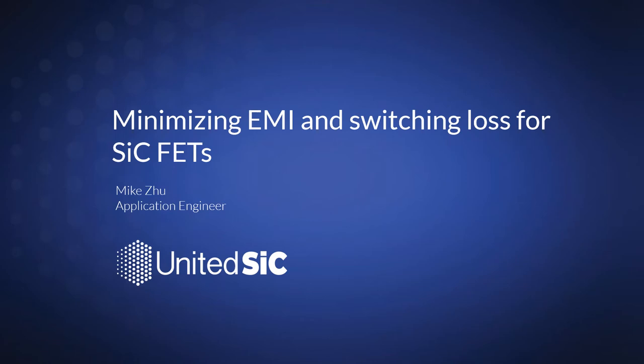Hello everyone, welcome to this webinar. As we know, fast switching power semiconductors are a typical source of EMI. A common solution is to increase gate resistance to slow down devices, but this will increase switching loss and limit the performance of silicon carbide devices. Through this webinar, we will show you how to minimize EMI and switching loss at the same time.